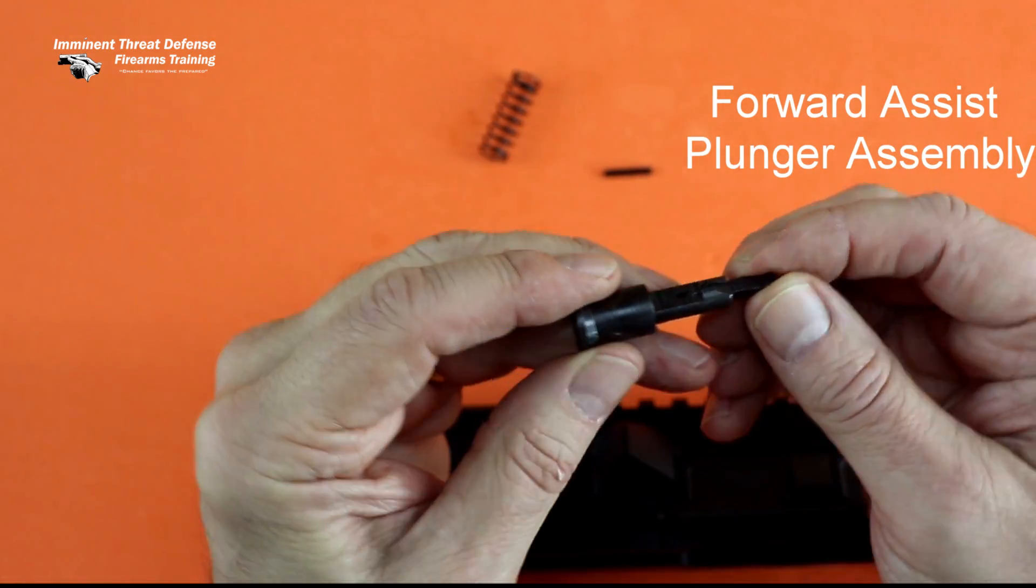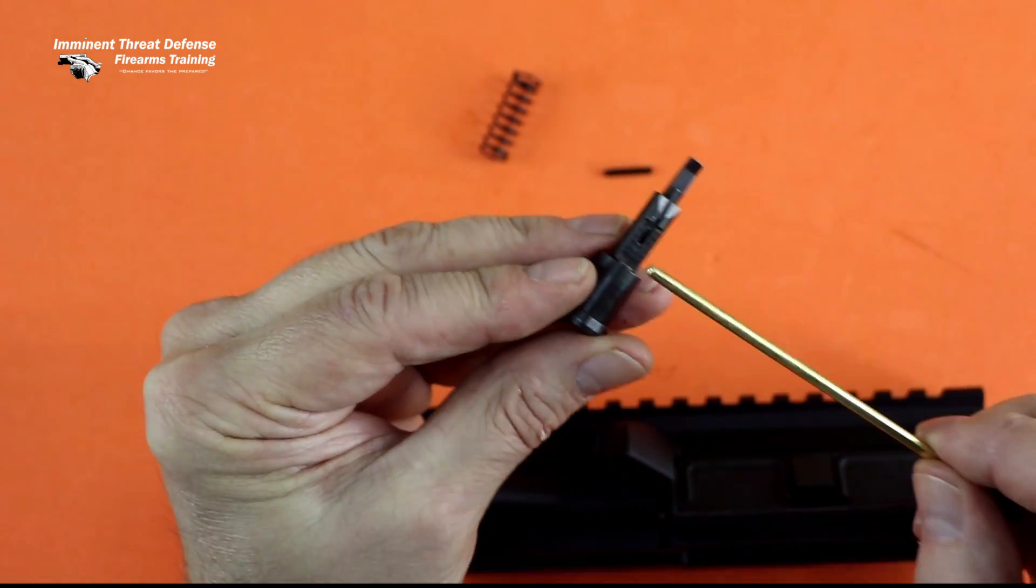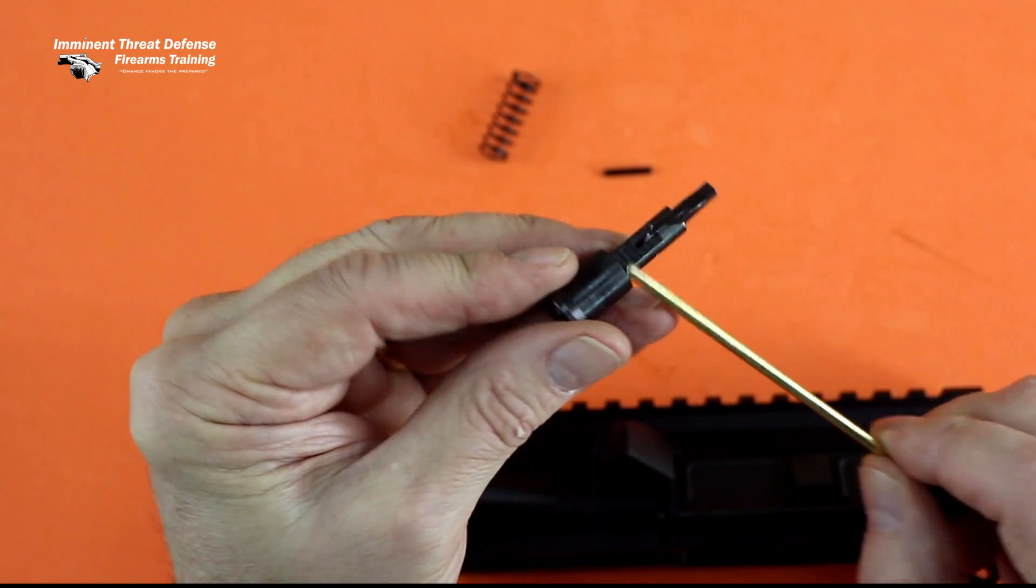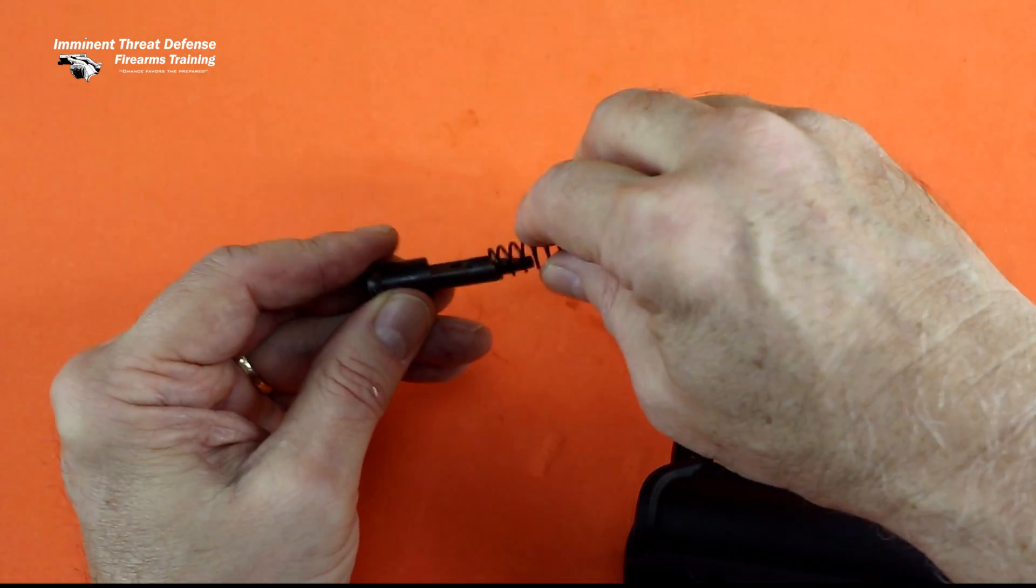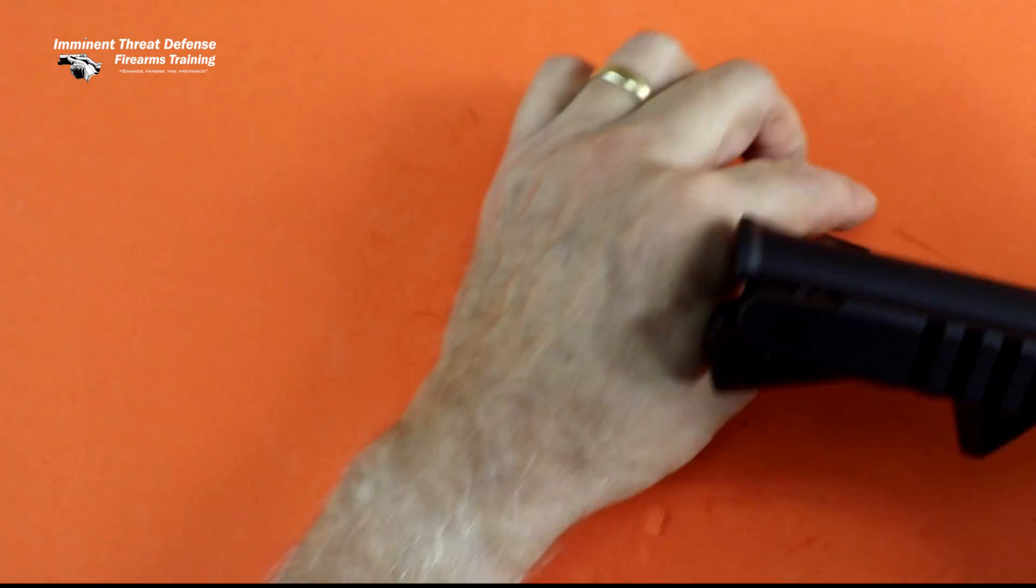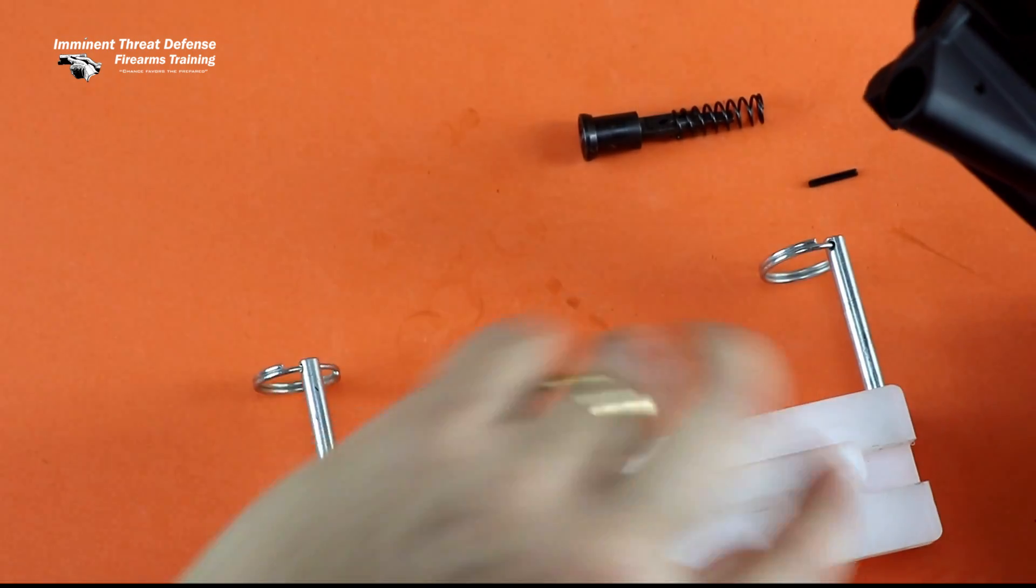The plunger assembly has got a flat spot on it. We can compress the spring and put that pin behind it. And then the pin has to go through that flat spot. So the plunger assembly has to be rotated to just the right angle.